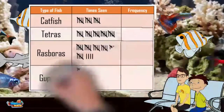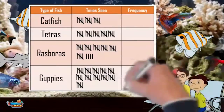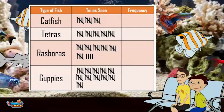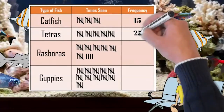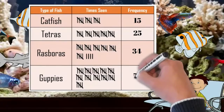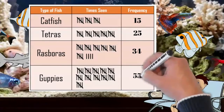I will make a tally each time I see the type of fish I have listed. The frequency heading means that at the end of the day I count up all the tallies and write the amount in the frequency portion. Here are yesterday's totals: there were 15 catfish, 25 tetras, 34 rosperas, and 55 guppies.